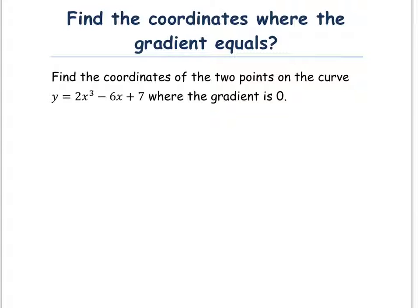So what we want to do here first is we want to differentiate y equals 2x cubed minus 6x plus 7, and then we want to set that differentiated, the dy by dx, equal to 0 so we can solve to find the x's.